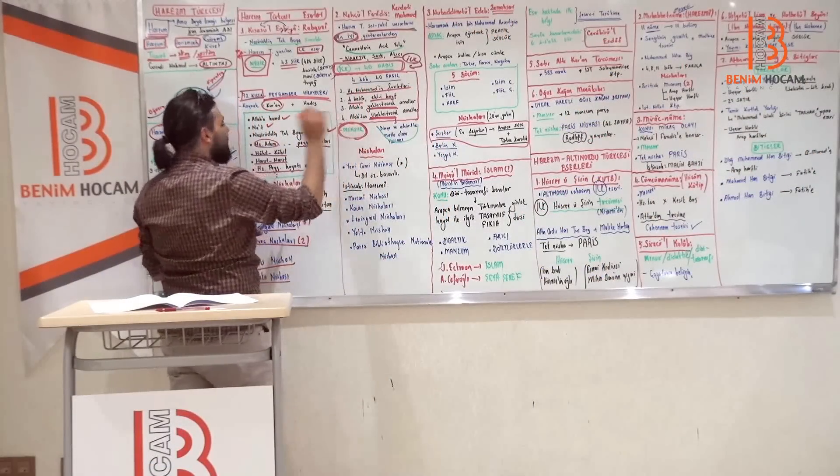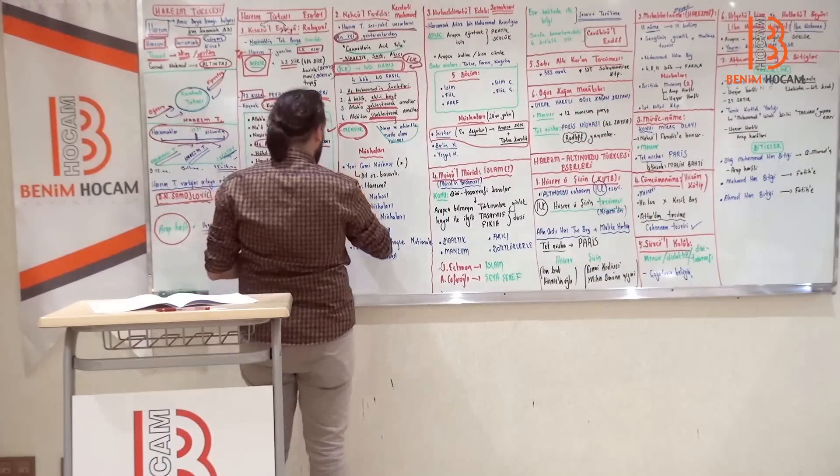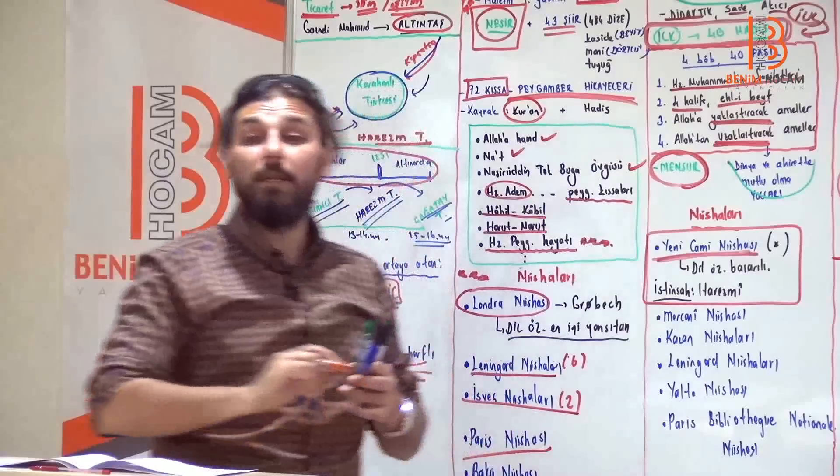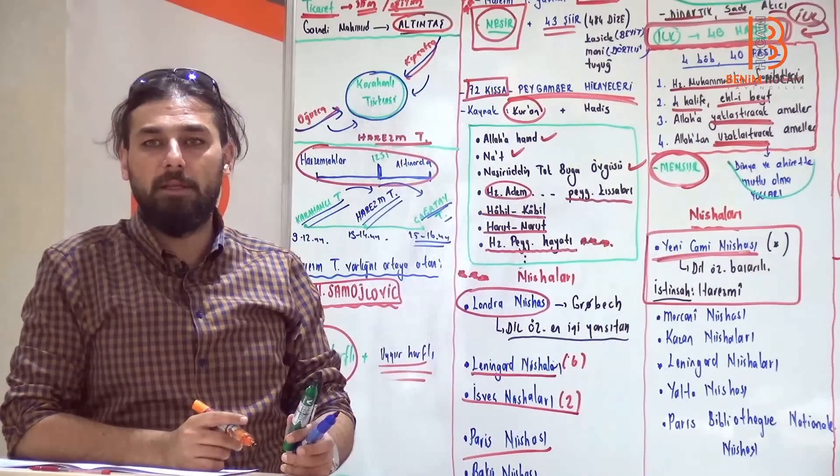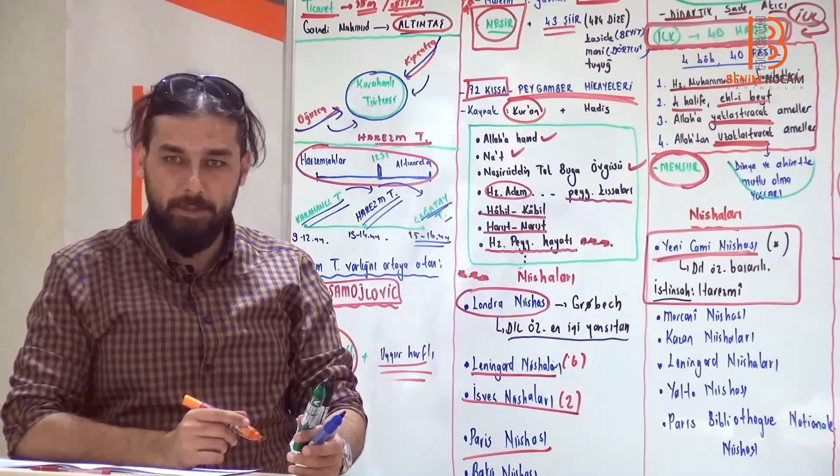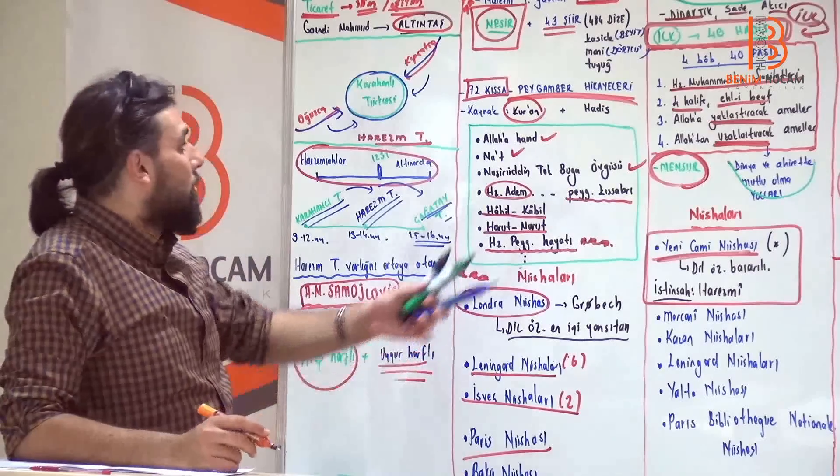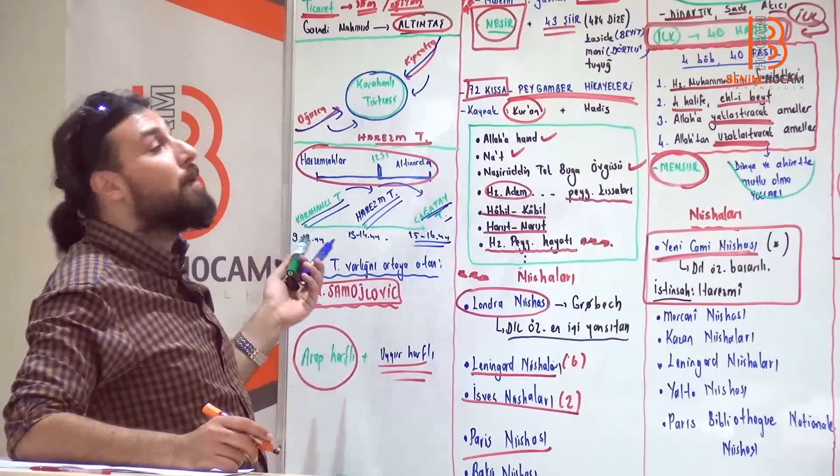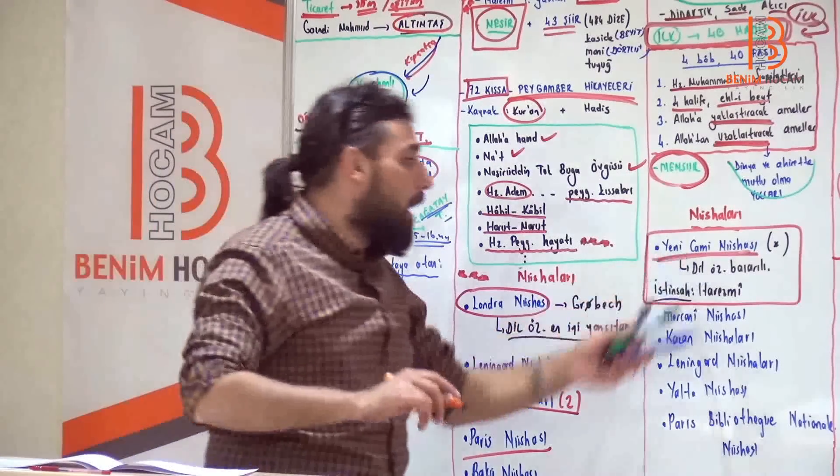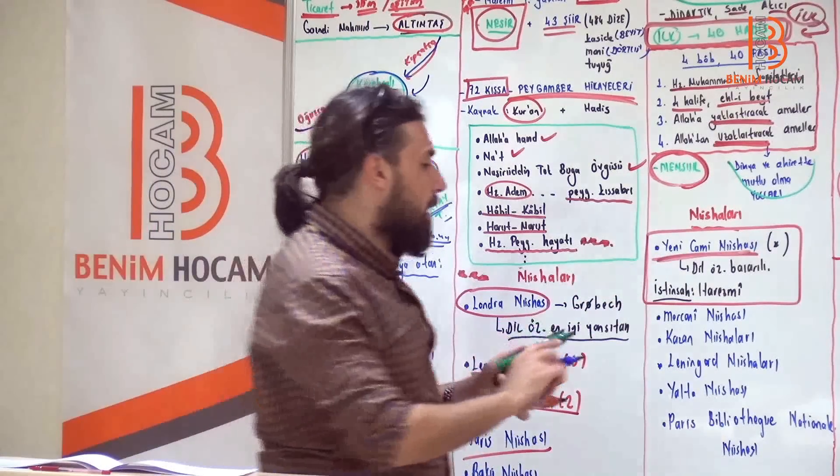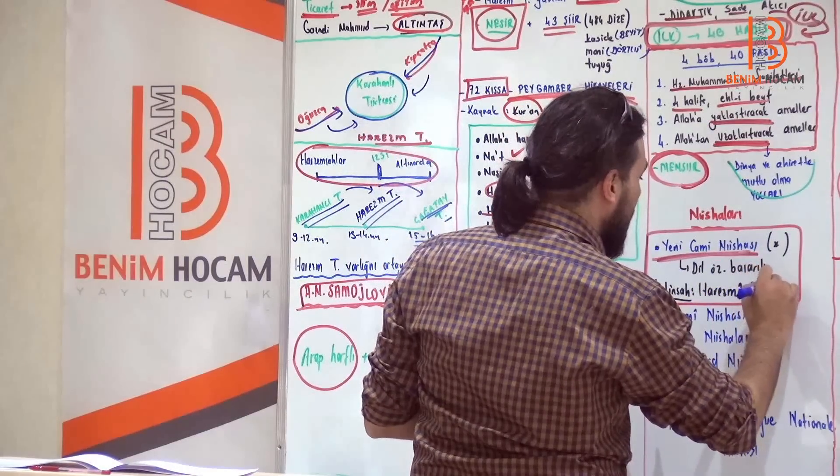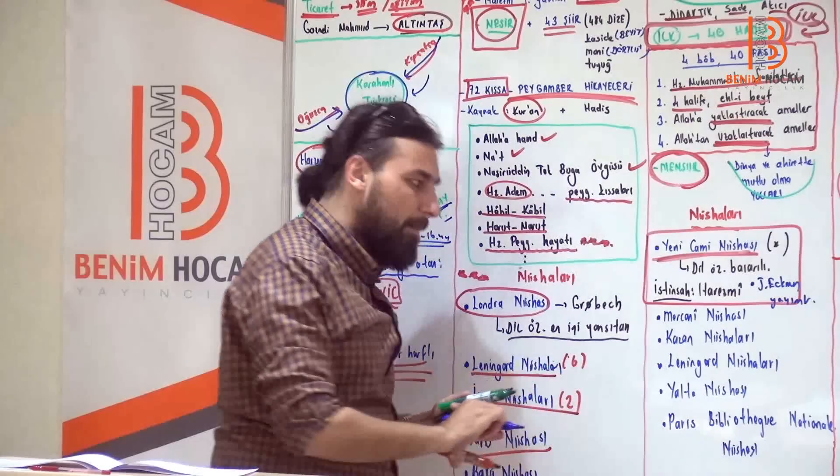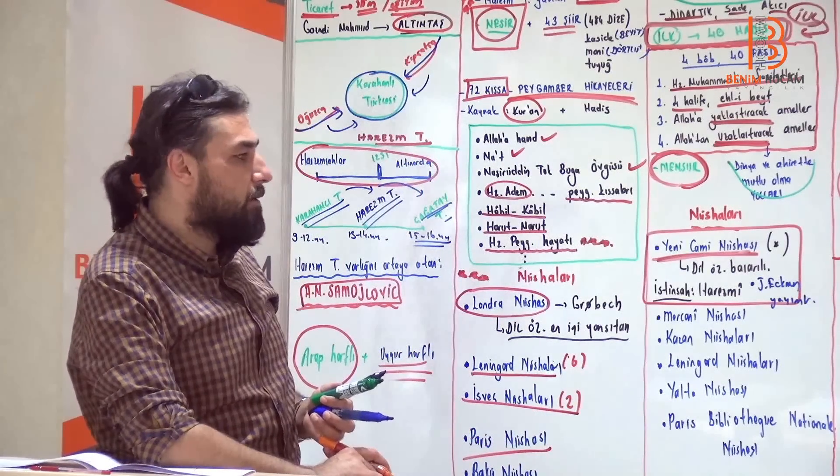Bu da mensurdur. Mensur bir eserdir. En iyi nüshası bilmemiz gereken nüshası yeni cami nüshasıdır. Hareizmi'nin istinsah ettiği, istinsah ne demek olduğunu biliyoruz değil mi? Önüne alıyor bir tanesi metni, alıyor oradan yazıyor. Mesela arkadaşlar burada da karşımızda kısa süre Enbiya'nın aslı orijinali kayıp mesela. Yani orijinal metni alıyor önden yazıyor. Hareizmi istinsah etmiştir. Yanoş Ekman da bunu yayınlamıştır.